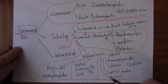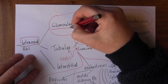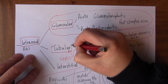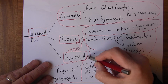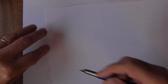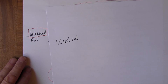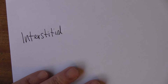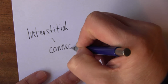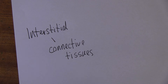Carrying on, we're still thinking about intrarenal AKI. We've thought about glomerular causes and tubular causes, and now we want to think about interstitial causes. Interstitial means affecting the tissue in the kidneys but not the glomerular components — specifically, it affects mostly the connective tissues in between the active components, the nephrons.